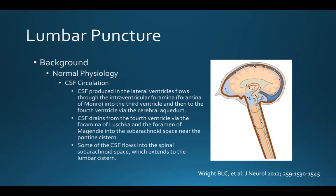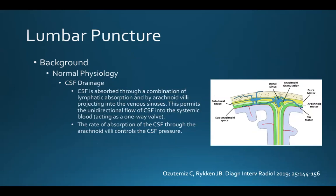There is a circulation pattern to CSF once it's produced. CSF produced in the lateral ventricles flows through the intraventricular foramina into the third ventricle, then to the fourth ventricle via the cerebral aqueduct. It drains from the fourth ventricle via the foramina of Luschka and the foramen of Magendie into the subarachnoid space near the pontine cistern. Some flows into the spinal subarachnoid space, extending inferiorly to the lumbar cistern. CSF is subsequently absorbed through lymphatic absorption and arachnoid villi projecting into venous sinuses, permitting unidirectional flow. The rate of absorption through the arachnoid villi controls CSF pressure.